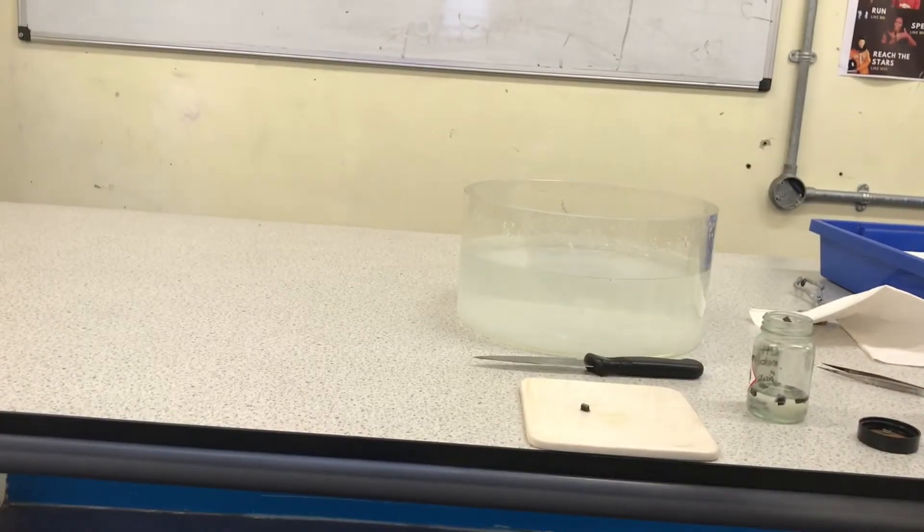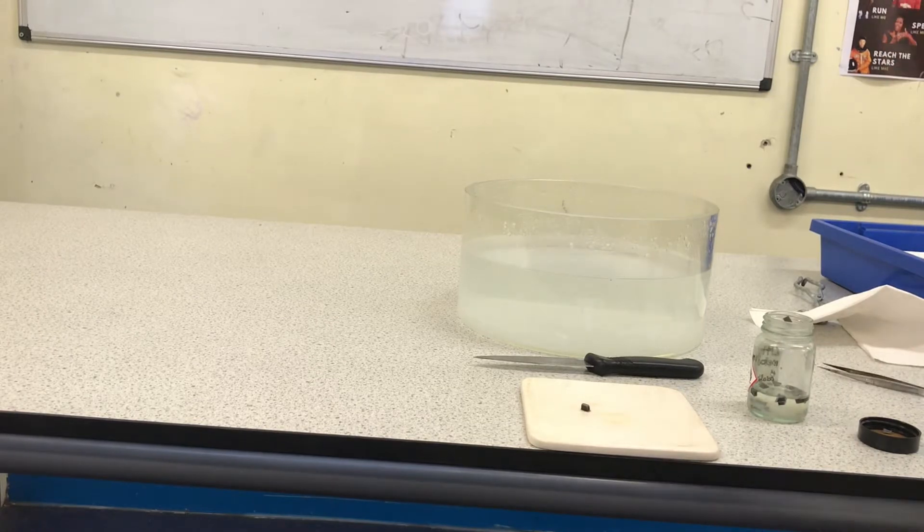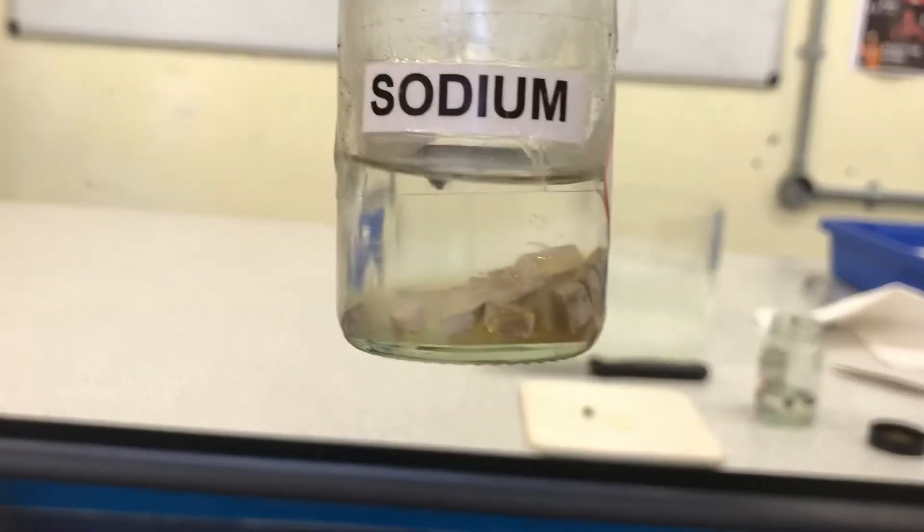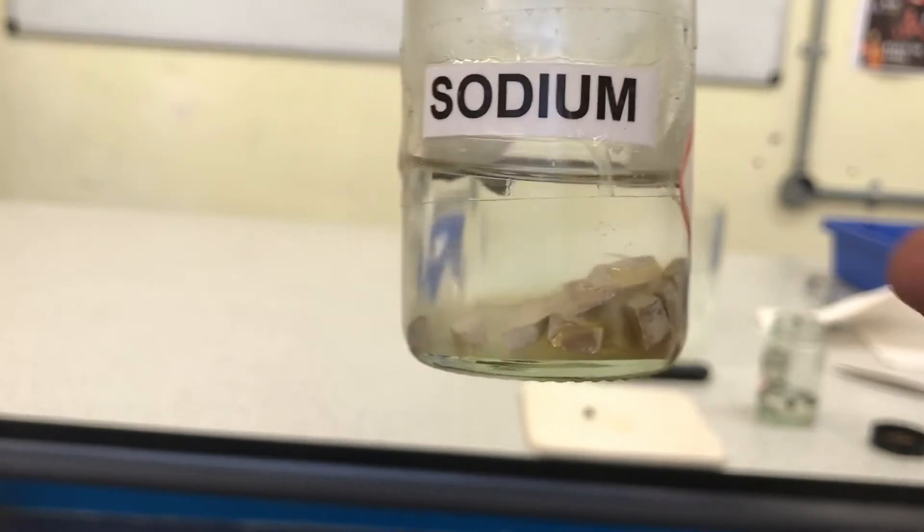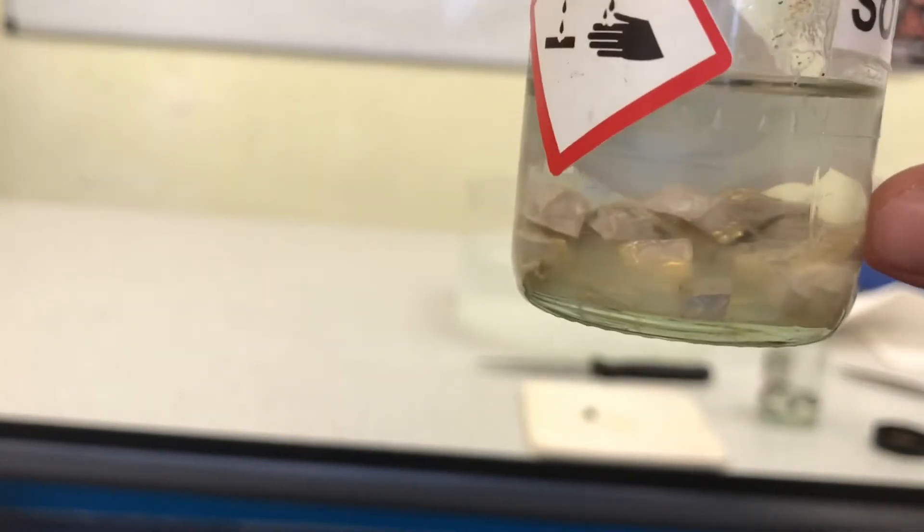Our next alkali metal is sodium. Sodium is also stored in oil as it reacts with the oxygen in the air. As you can see, some of it does have some luster to it, some shine, but some of it is quite dull due to being exposed to small amounts of oxygen.